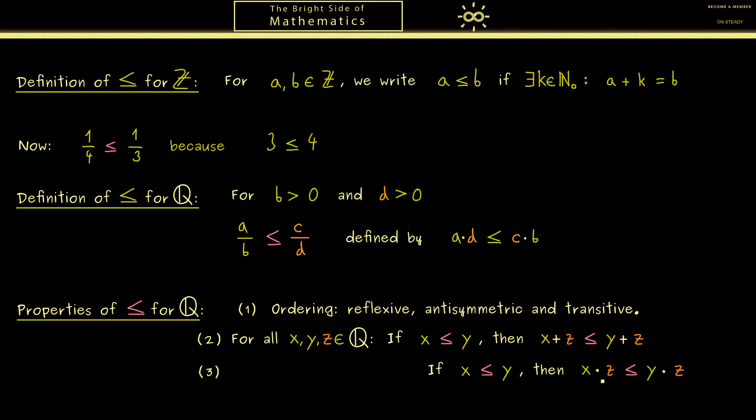However, this only holds if z is positive; otherwise, we would flip the ordering. So this is the property that tells us that the ordering and the multiplication are compatible.